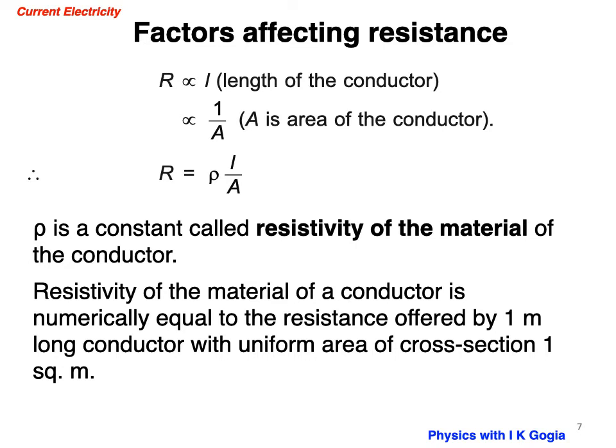Resistivity of material of a conductor is numerically equal to the resistance offered by one meter long conductor with uniform area of cross-section 1 square meter. You can have a look at the expression for resistance rho L by A. If L is 1 meter and A is 1 square meter, the equation becomes rho equal to R and hence the definition. Its SI unit is ohm meter.